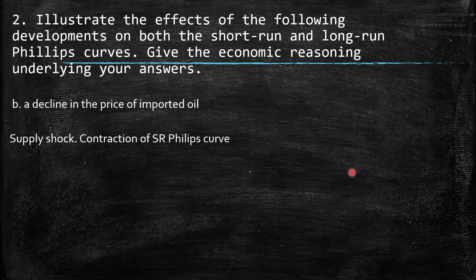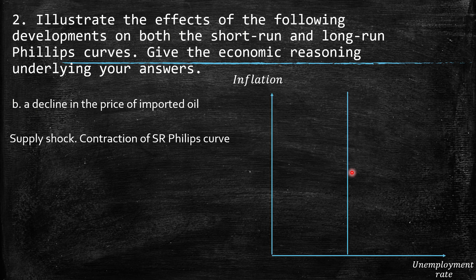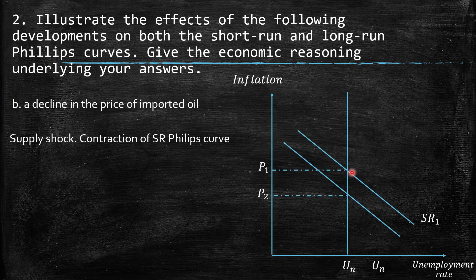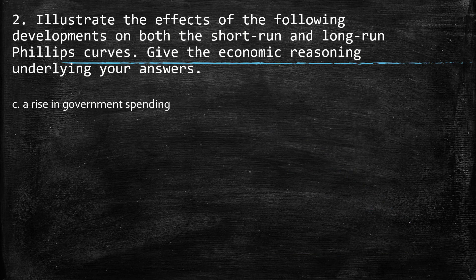B: a decline in the price of imported oil. This is an example of a supply shock — opposite to having an increase in prices, here we have a decrease. So it's going to be a contraction of the short-run Phillips curve. As a consequence, we are going to face lower prices and exactly the same level of natural unemployment.